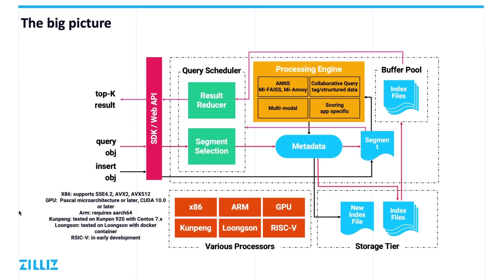Here is an overview of a Milvus single-node server. I want to highlight four major parts. The first part is the support for heterogeneous computing. Due to Zilliz's experience in heterogeneous compute, we thought about how to support different computing resources to accelerate computation-intensive scenarios with Milvus. The heterogeneous computing resources supported by Milvus include the SSE, AVX2, and AVX512 instruction sets. We also support NVIDIA GPUs and ARM processors. Currently, we are working with some partners on how to further extend Milvus to the RISC-V architecture, though this work is still in its early stages.